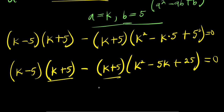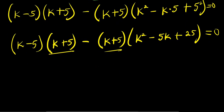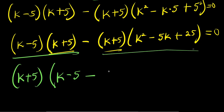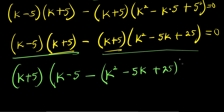We factor out (k plus 5) from both terms. Dividing by (k plus 5), the first part gives (k minus 5), and dividing the second part by (k plus 5) gives minus (k squared minus 5k plus 25), and this equals zero.